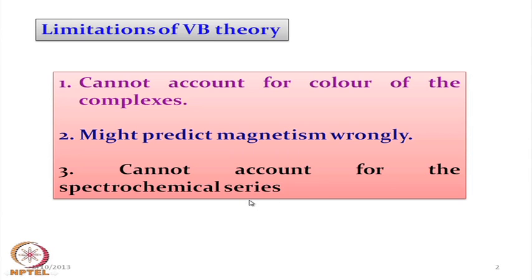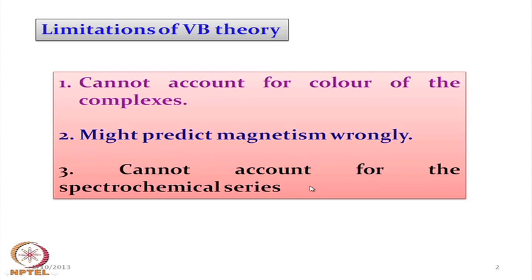Valence bond theory also cannot account for the spectrochemical series, where we can arrange the ligands according to their strength, and that strength will change the corresponding color of these complexes. If we have 5 or 10 ligands all interacting with a particular metal center such as nickel 2+ or copper 2+, we find that depending upon the complexation of all these ligands there are changes in the corresponding color. How we arrange those ligands in a particular series is called the spectrochemical series. So valence bond theory cannot explain the corresponding color of these complexes or arrange these ligands accordingly.